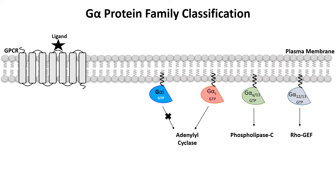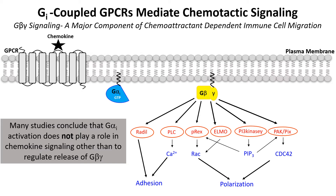There are four families of G-alpha subunits. My thesis work is focused on G-alpha-I, which inhibits adenylyl cyclase. One of the processes that GI-coupled GPCRs mediate is chemotactic signaling. The activation of the receptor by chemokine leads to release of G-alpha-I and G-beta-gamma.